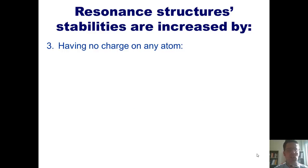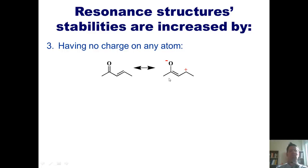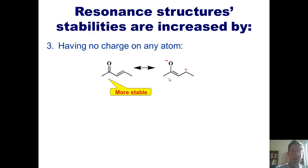Rule three: having no charge on any atom. If I have a molecule where there are no charges anywhere and everything has a full octet, I can imagine creating a resonance contributor in which the pi electrons push up onto the oxygen giving it a negative charge, and the other pi electrons swing like a door on a hinge to form a carbon-carbon double bond giving a positive charge on that carbon. Both are completely legitimate resonance contributors, but the one with no charges and full octets everywhere is of course the more stable and greater resonance contributor.